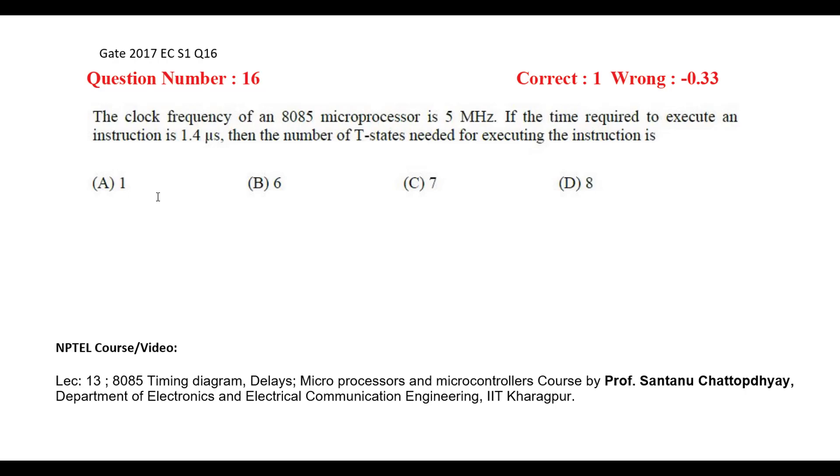This question is given in GATE 2017 session 1 EC paper. The question is: the clock frequency of an 8085 microprocessor is 5 megahertz. If the time required to execute an instruction is 1.4 microseconds, then the number of T states needed for executing the instruction is. We need to find out the number of T states required to execute a certain instruction.